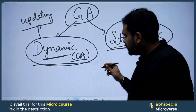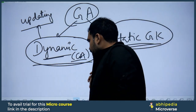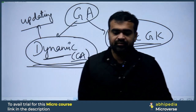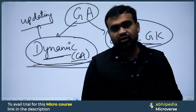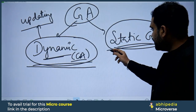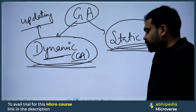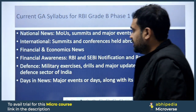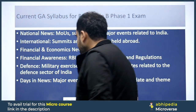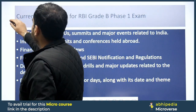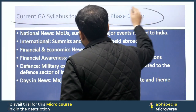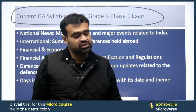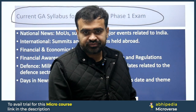So we will look at each one by one — which topics are important in the Dynamic part, i.e., Current Affairs, and which topics are important in the Static part. First, let's talk about the Current Affairs/Dynamic part of GA.